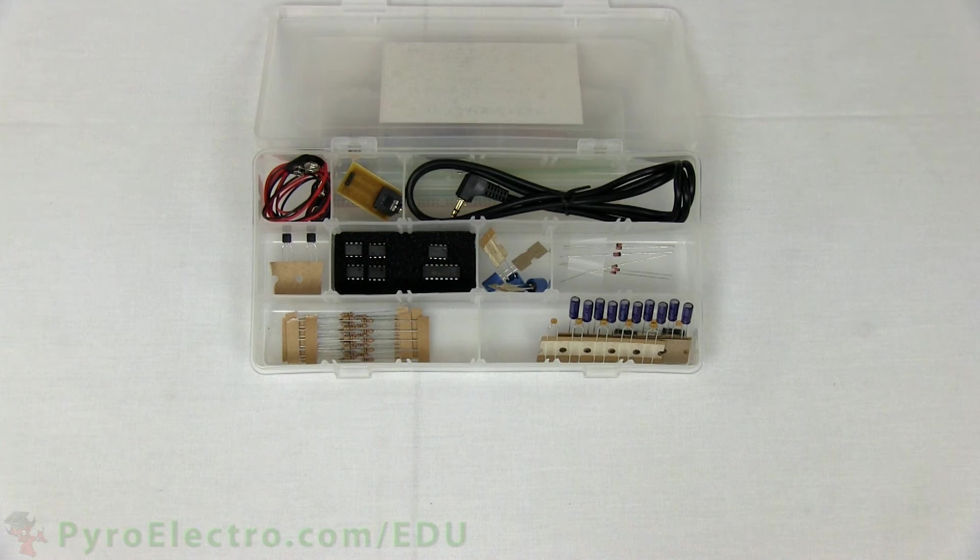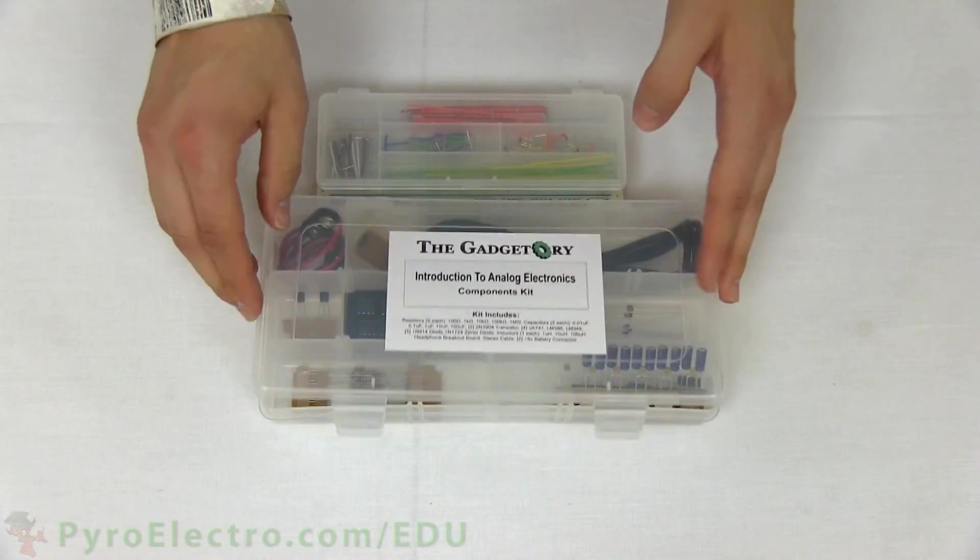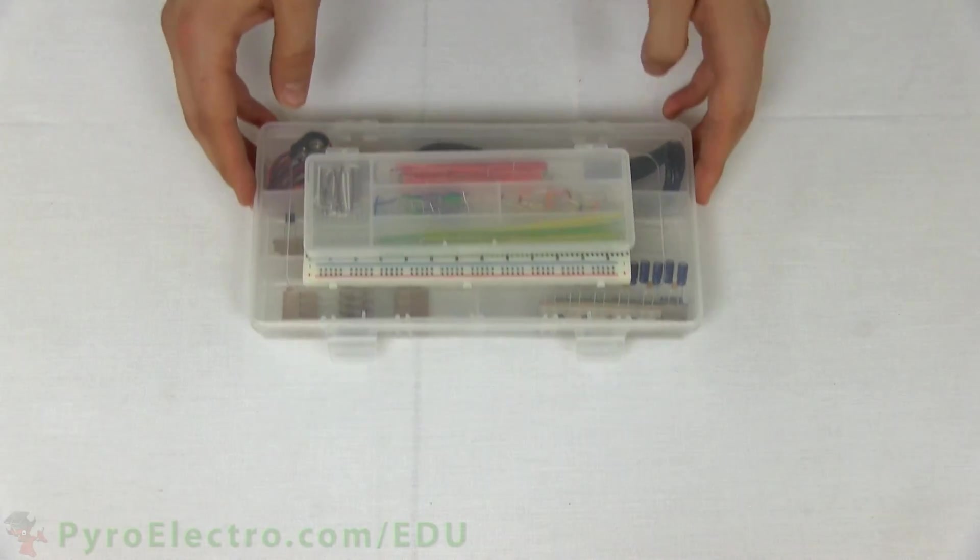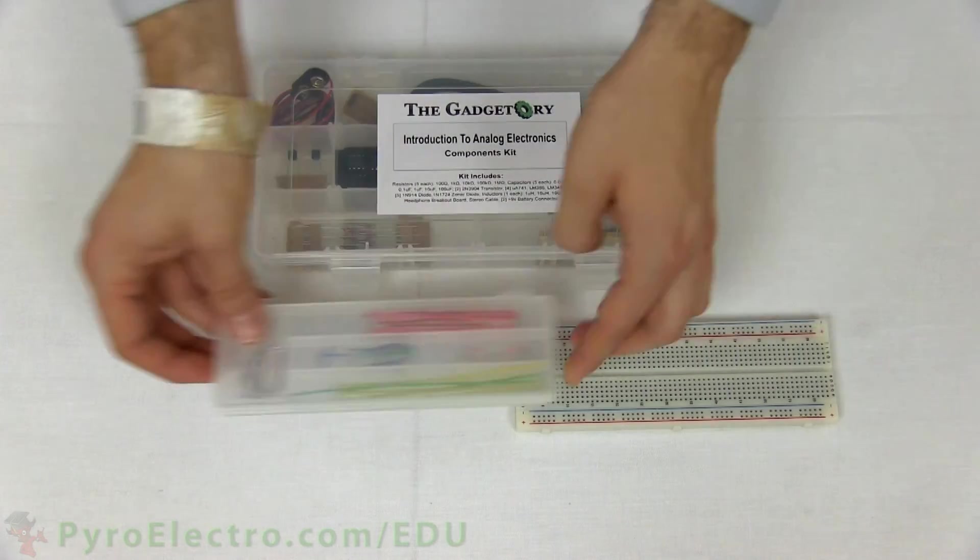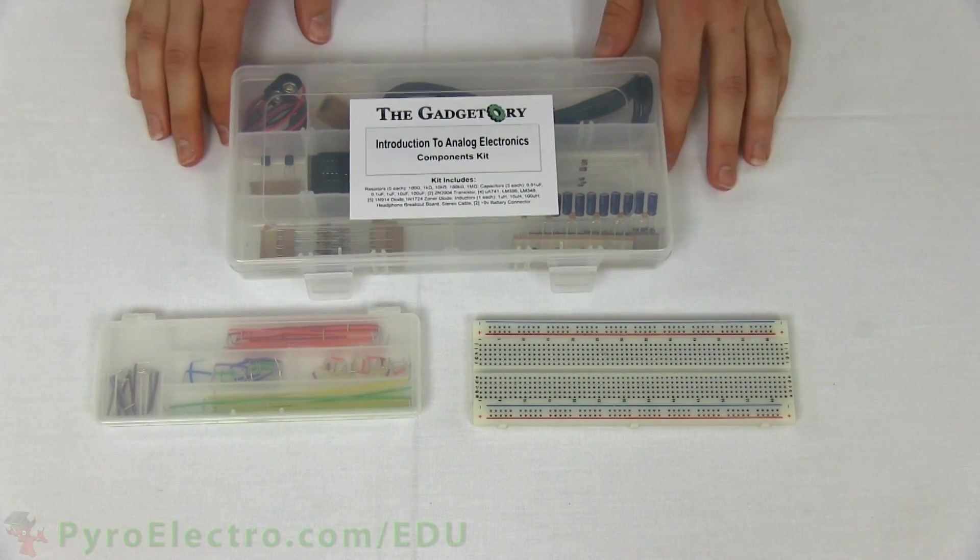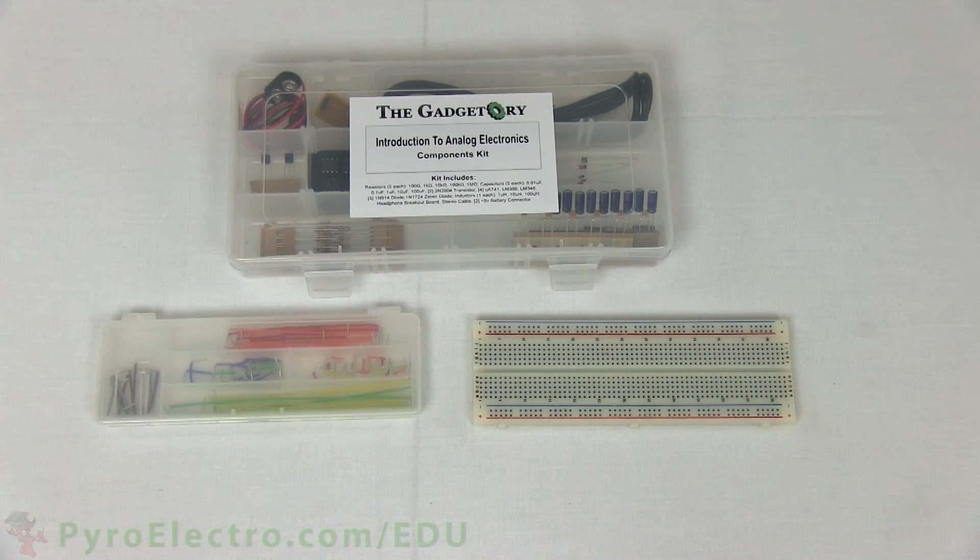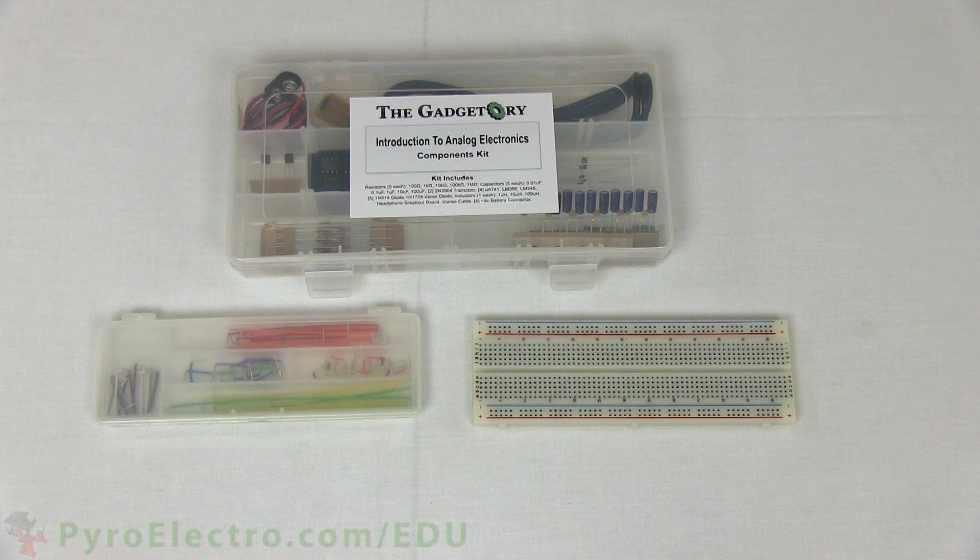All of these parts were provided to us courtesy of Gadgettory.com, an online electronics store. If you can't buy parts online, don't worry, your local electronics store will have 90% of the parts seen in this kit, and you will still be able to follow along, experiment, and learn about analog electronics.